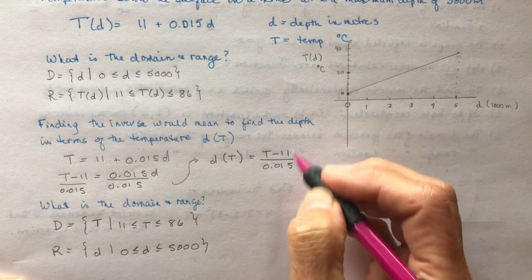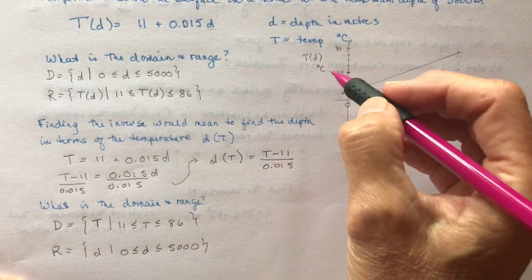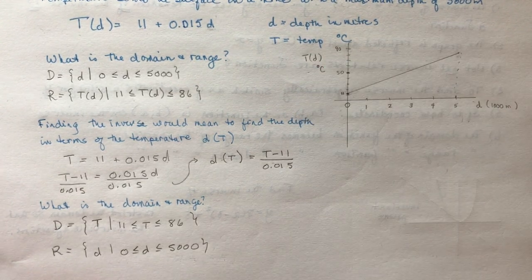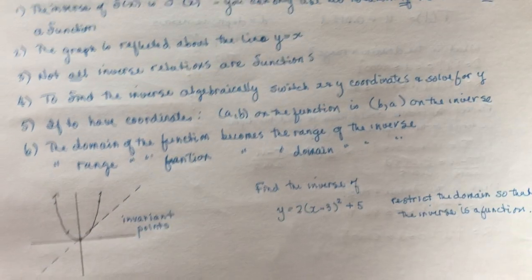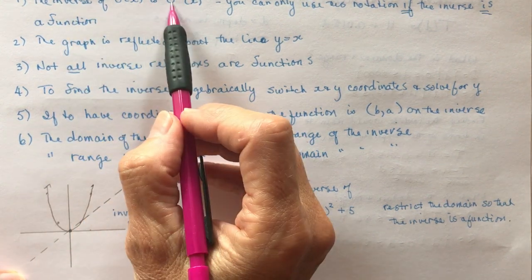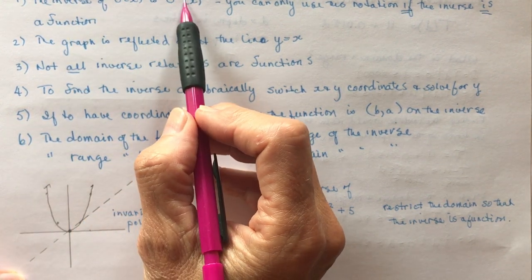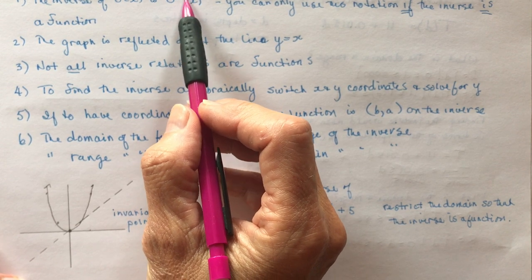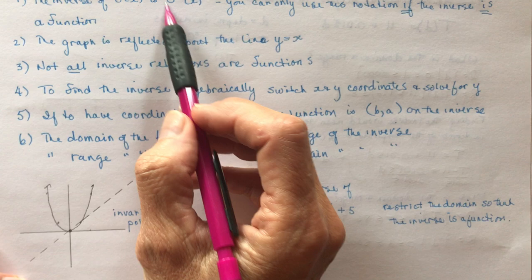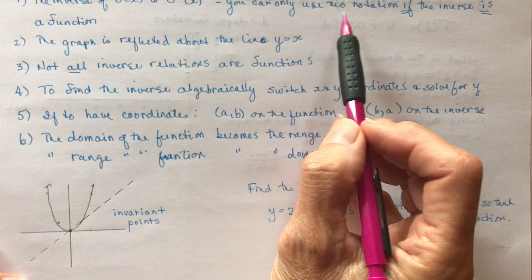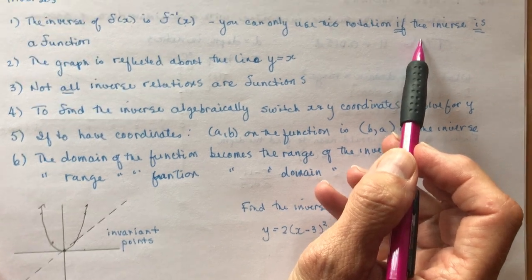If I were to draw this the other way, now we'd have d on here and the temperature along here. The basic rules for inverse functions—we've done this in grade 11 again. The inverse of f(x) is f^(-1)(x). This is not f prime x or 1 over it as some people sometimes think because it's a negative exponent. It's just terminology that says this is the inverse function. You can only use this notation if the inverse is a function.